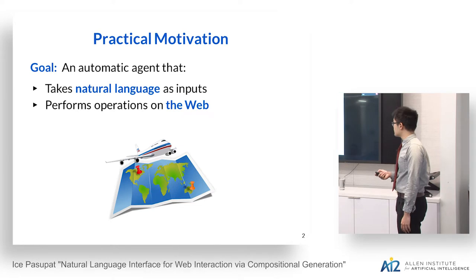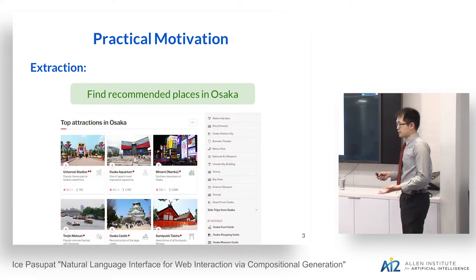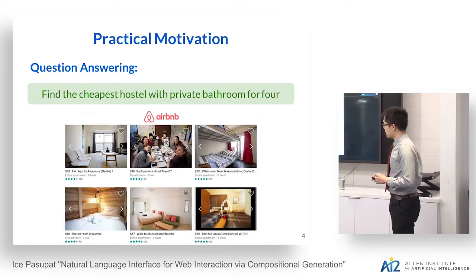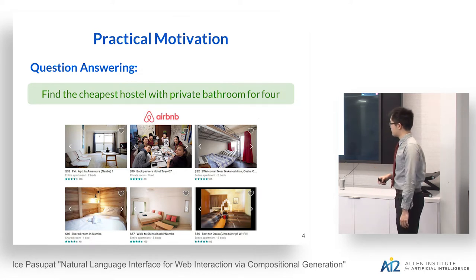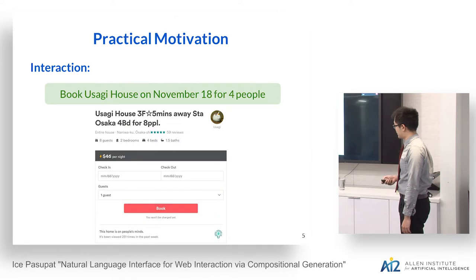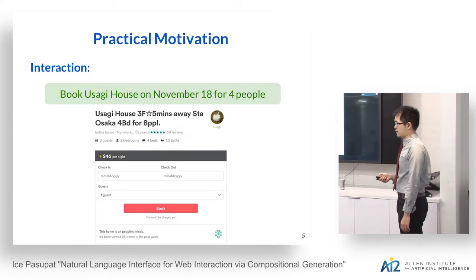What kind of tasks? Suppose I would like to book a travel to Japan. The first task is extraction — given a sentence like 'find recommended places in Osaka,' extract all the names of those places from a web page. The next is question answering: given a complex web page showing accommodations, find the cheapest hostel with private bathroom for four. The last is web form interaction: book Usaki House on November 18 for four people by filling out the web form.